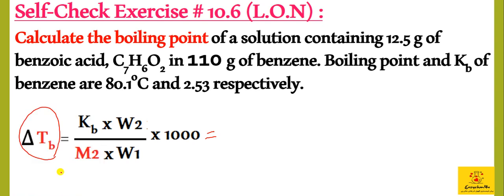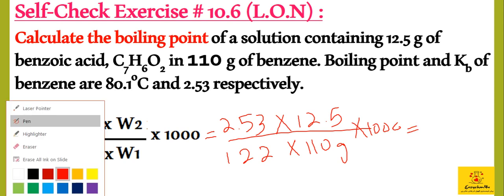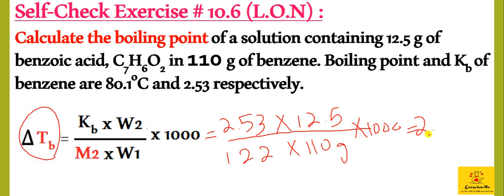Here we have KB value given, i.e. 2.53, and weight of benzoic acid is 12.5 grams. Molecular weight of benzoic acid is 122 grams per mole, and weight of benzene is 110 grams, multiplied by 1000. The answer is 2.357 degrees centigrade.